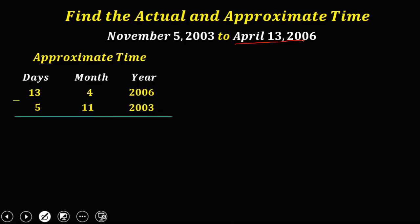13 minus 5 equals 8. For 4 minus 11 — since 11 cannot be subtracted from 4, we borrow 1, so 4 plus 12 equals 16, and 16 minus 11 equals 5. Since one year equals 12 months, the year column becomes 2005 minus 2003, which equals 2.